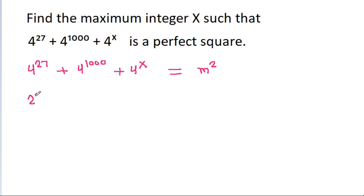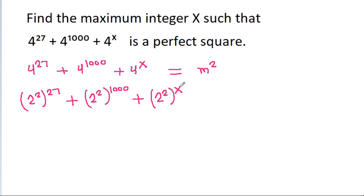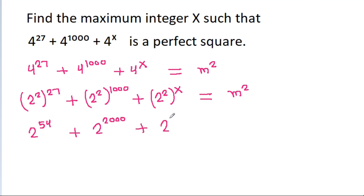And since 4 = 2², we have 2^(2·27) + 2^(2·1000) + 2^(2x) = m², that is 2^54 + 2^2000 + 2^(2x) = m². The powers are 54, 2000, and 2x.